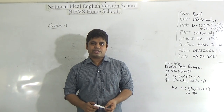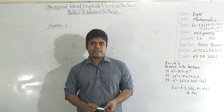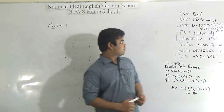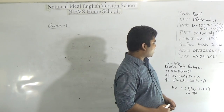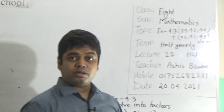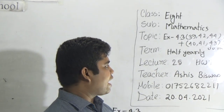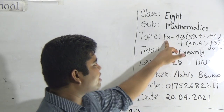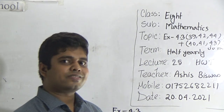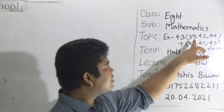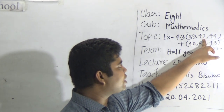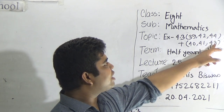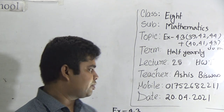Today I am going to take a math class for the students of class 8. Today is our lecture number 25 of half yearly and today's HW number will be 17. Our today's topic is exercise 4.3. From exercise 4.3, we shall solve questions 39, 42 and 44 as your CW, and 40, 41 and 43 will be your HW.